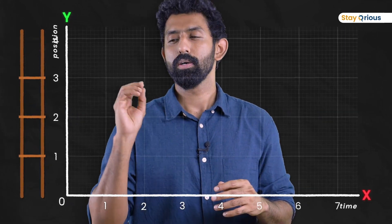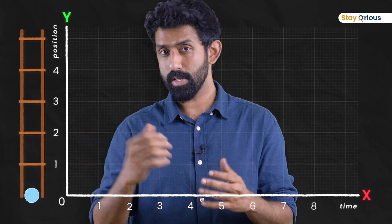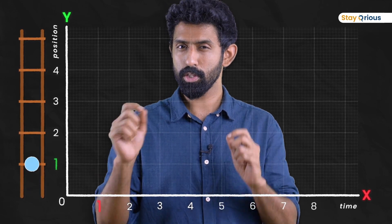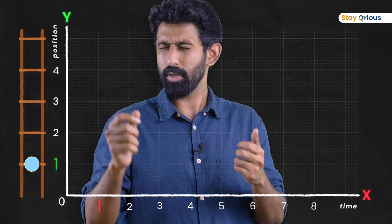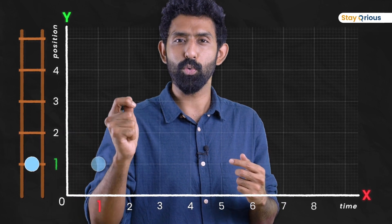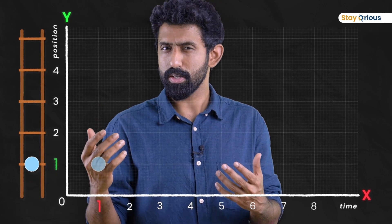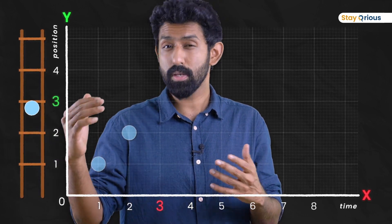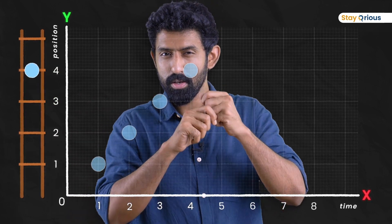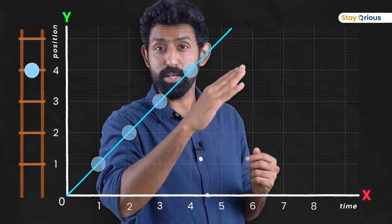Now the ball was born there, but instead of sleeping there, it travels one meter every second. After one second, it's there, which means on the position-time graph it's going to have its picture at one comma one. At two seconds, how far is it? Two meters. At three seconds, three meters. Four seconds, four meters. You keep pasting those images. Join the dots — what do you get? You get a straight line that's sloping upward.